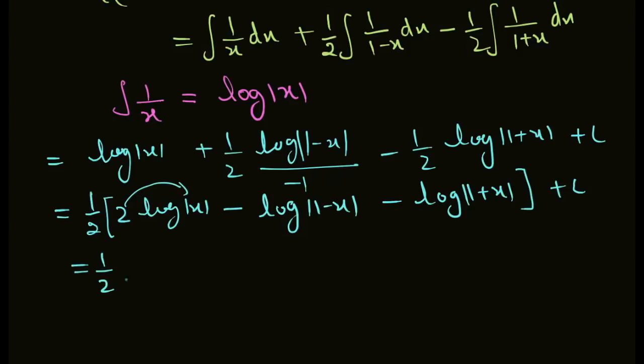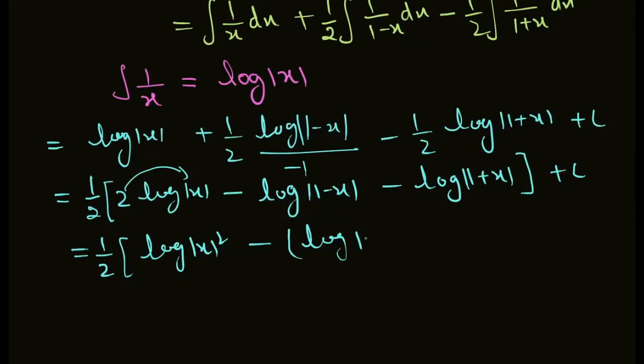This equals 1 by 2 times the following. Using the log property that when a number is in front, it becomes the power: log(x squared) minus, taking common, log(1 minus x) plus log(1 plus x) plus C.